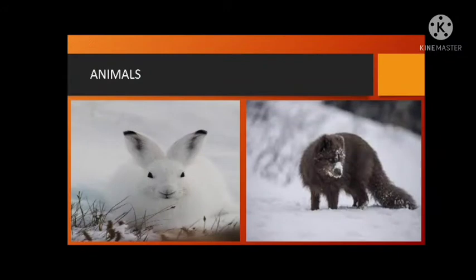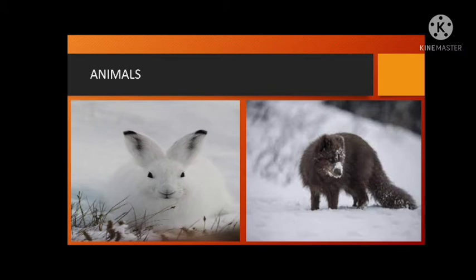Now we will talk about the animals found in this area. Only those animals that can survive the extremely cold conditions are found in Greenland. As you can see in the picture, the rabbit and the fox have a thick fur, which is why they can survive in this kind of temperature. A peculiar animal found in this region is the musk ox, which has a long shaggy coat almost reaching the ground.